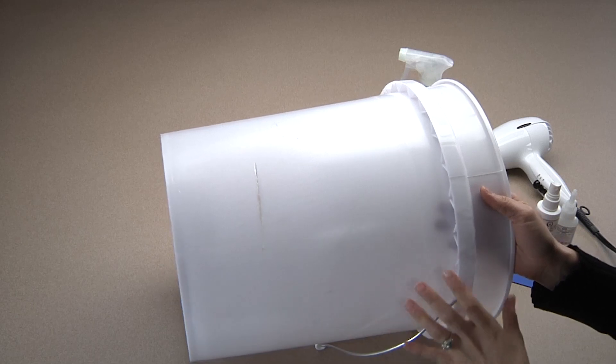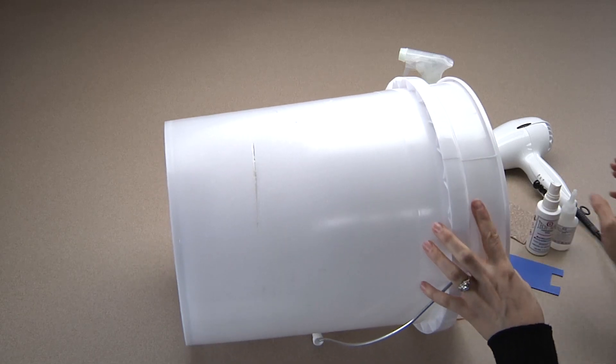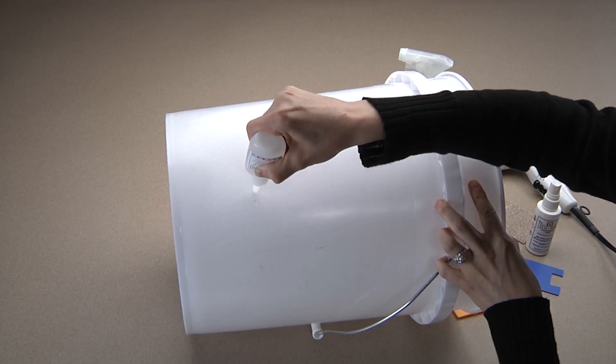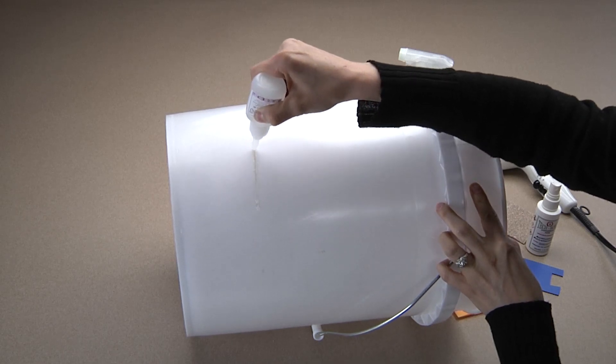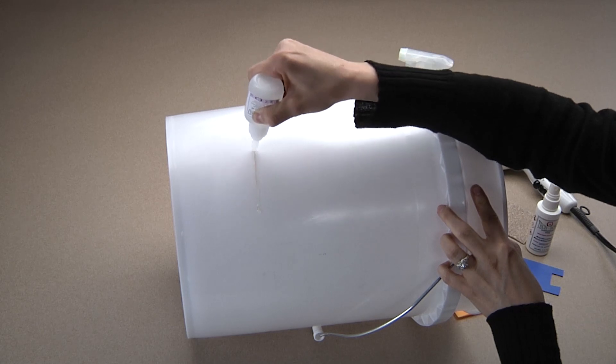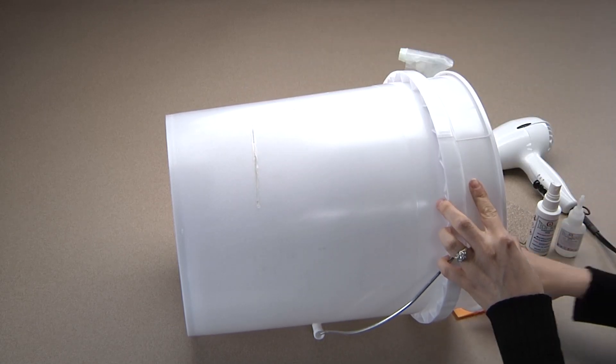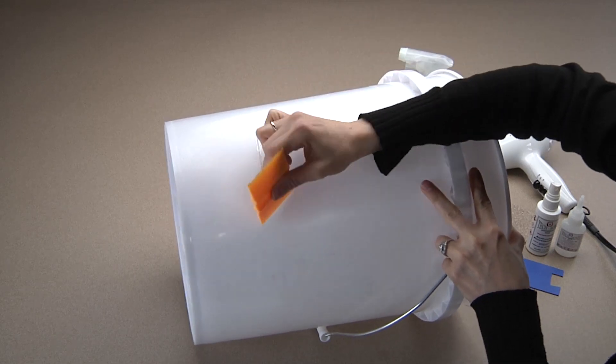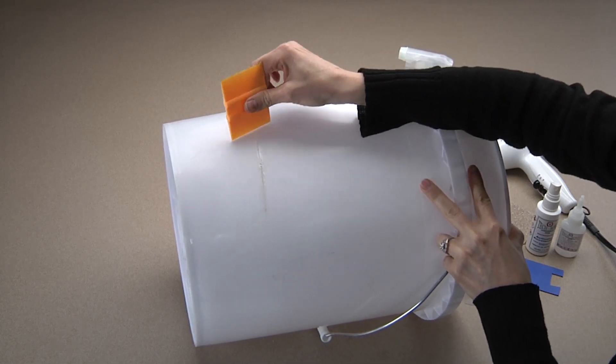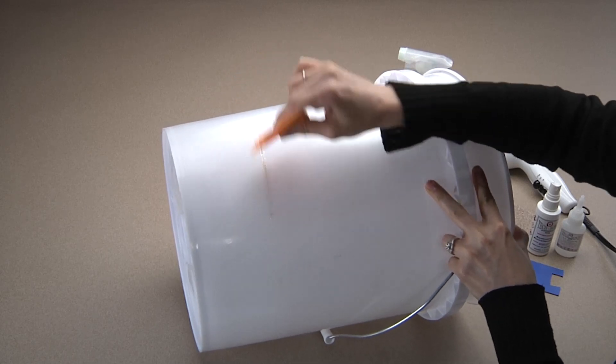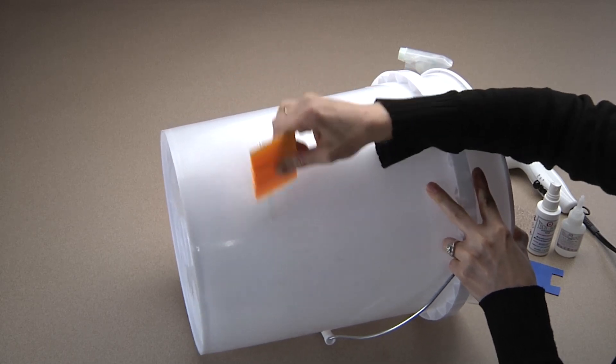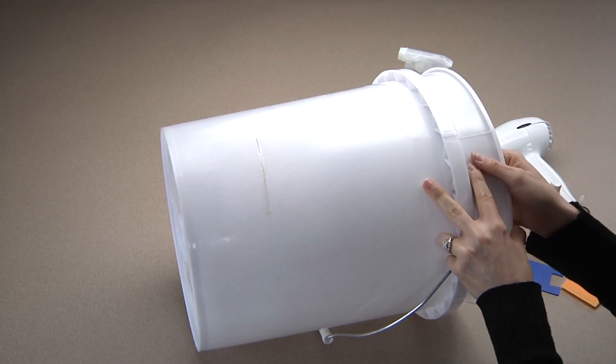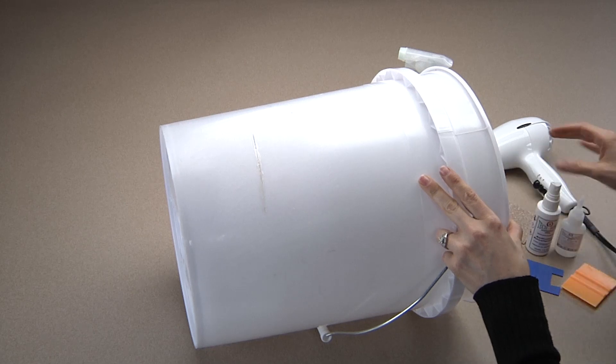Now, run a bead of the SI Adhesive along the length of the crack. And spread the SI Adhesive over the seam with a flat surface. In this case, we are using one of our glue squeegees. Now, spray the seam with the Activator Accelerator.